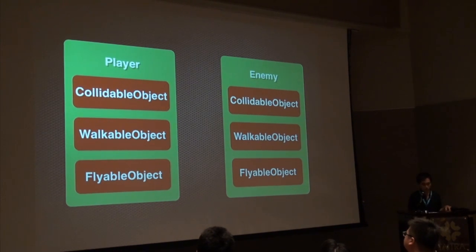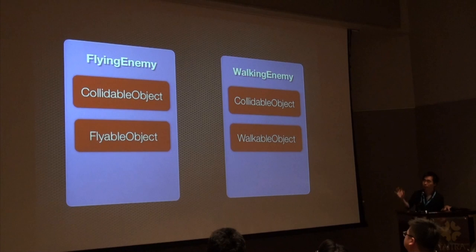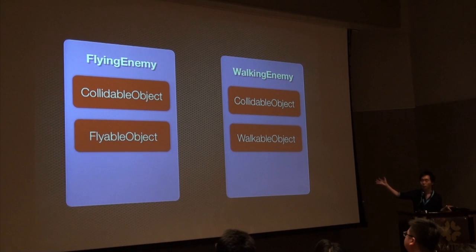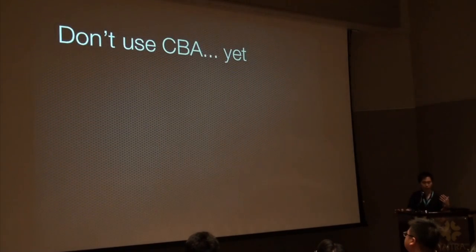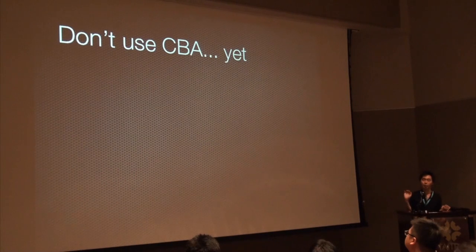那我們重新回來看一下前面的那個例子。今天有Player跟Enemy這兩個遊戲物件GameObject，他們裡面分別繼承是Collidable、Walkable跟Flyable的Object。如果我們把這三個東西都把它變成所謂的遊戲元件GameComponent之後，就可以把它分出來，就可以變成說我今天去Create一個Flying Enemy，它裡面只要有兩個零件就是CollidableComponent跟FlyableComponent，相對來講有一個只會行走的敵人的話也沒有問題，因為我只要把那兩塊它需要的功能像積木一樣把它塞進去就好了。